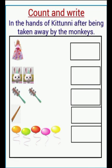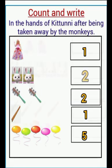After some time, some monkeys took away some toys from Kittenie's hand. Here we see the toys remaining after being taken away by the monkeys: one dog doll, one balloon doll, two kilook, one barrel, and five balloons.